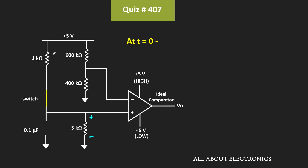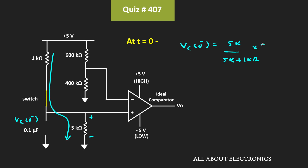The voltage across the capacitor at t = 0- is VC(0-) = 5kΩ / (5kΩ + 1kΩ) × 5V = 25/6 V. That means initially, at t = 0-, the voltage at the non-inverting terminal is 25/6 V, while the voltage at the inverting terminal is 2V. Since V+ is greater than V-, the output of the comparator was initially high, equal to +5V.